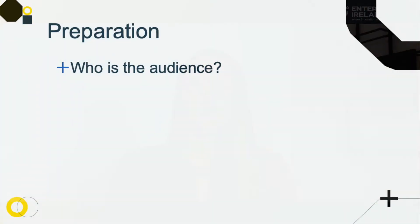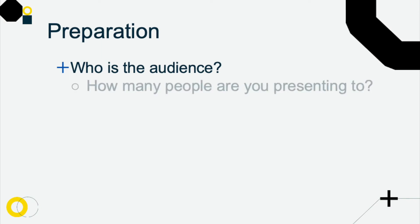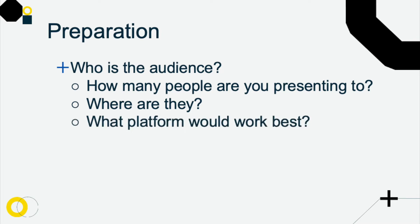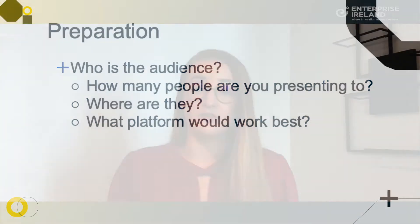Let's start by looking at preparation. The absolute first thing you want to do when putting together your presentation is to understand your audience. You have to figure out who they are, how many there are — you might be presenting to a group of five or a group of 500 — and you want to figure out where they are in the world. This is going to help you figure out your story, which platform you want to use, and what you want out of the presentation.